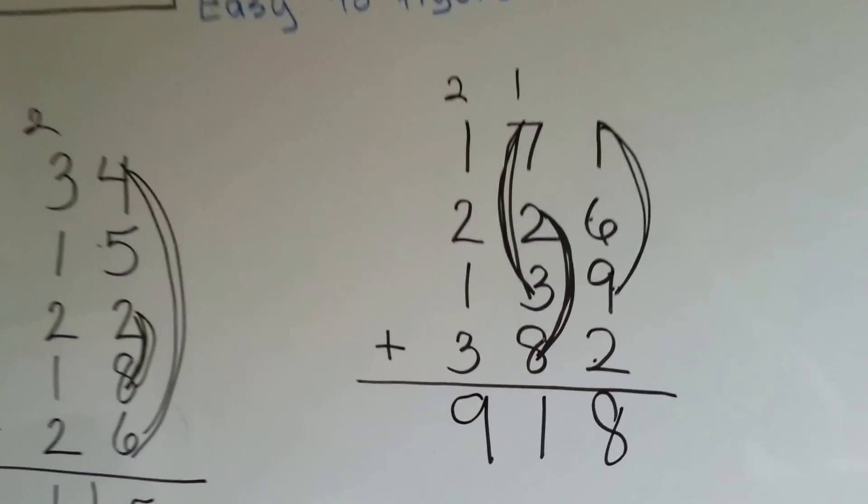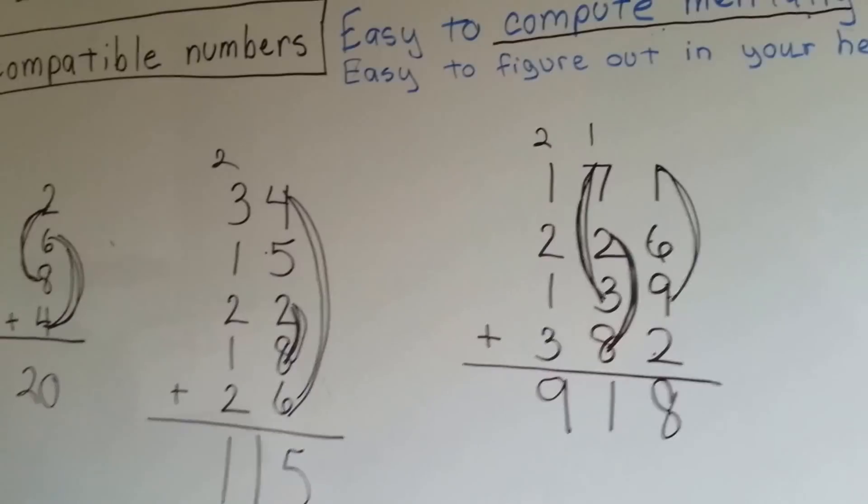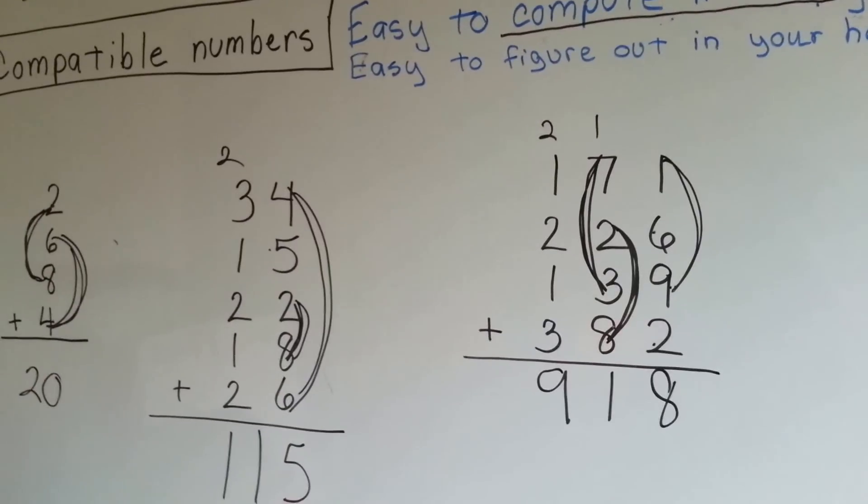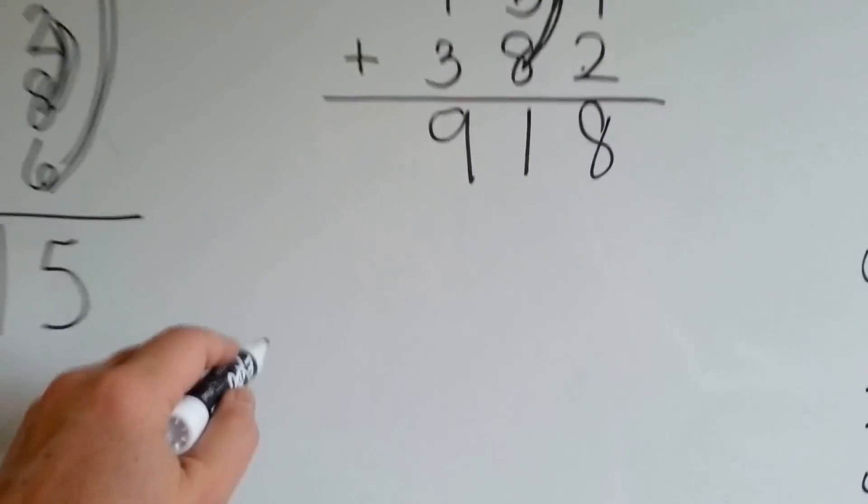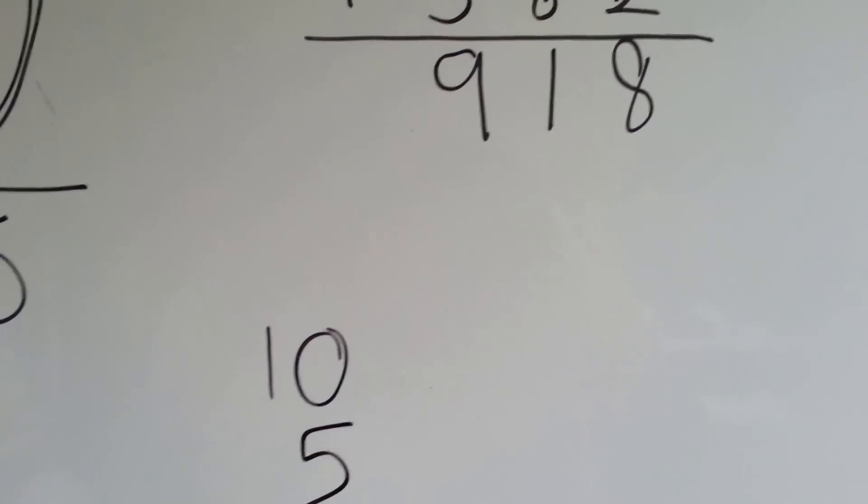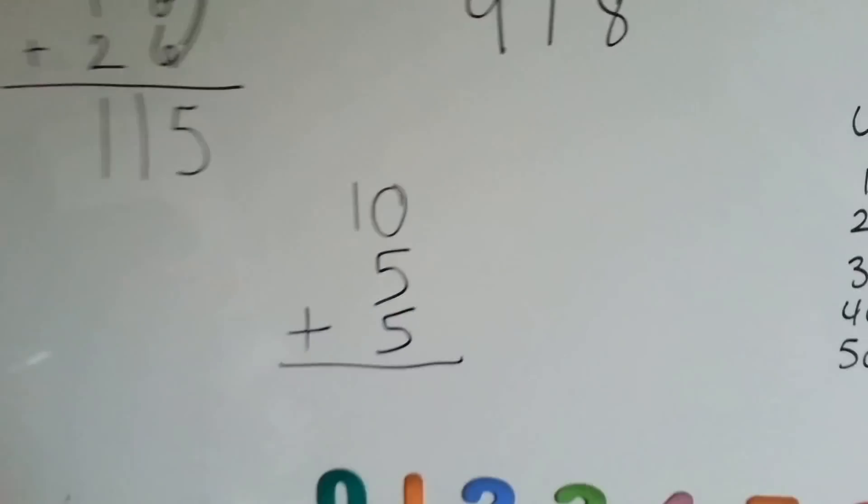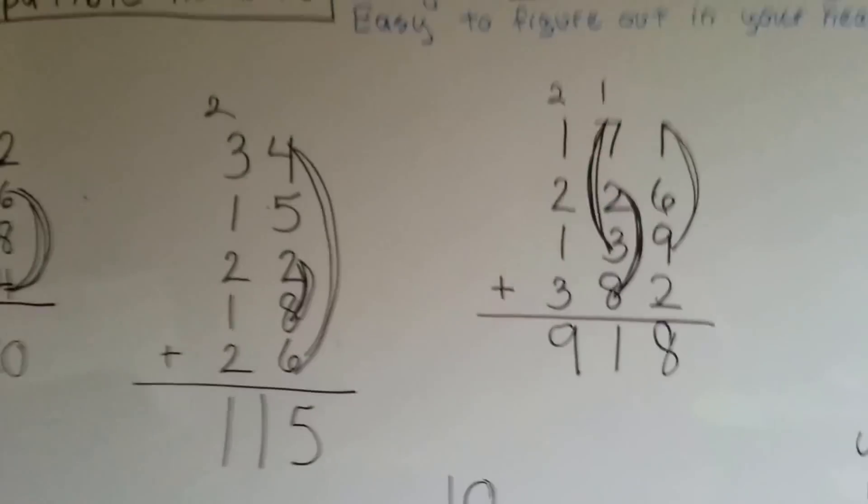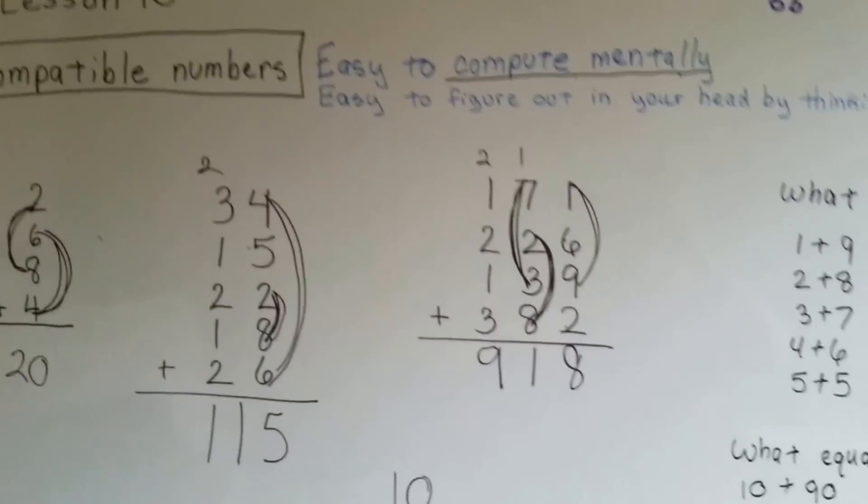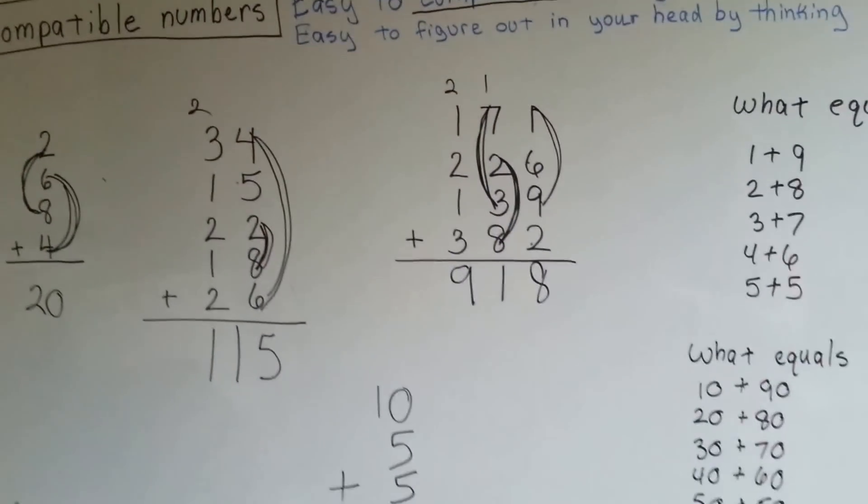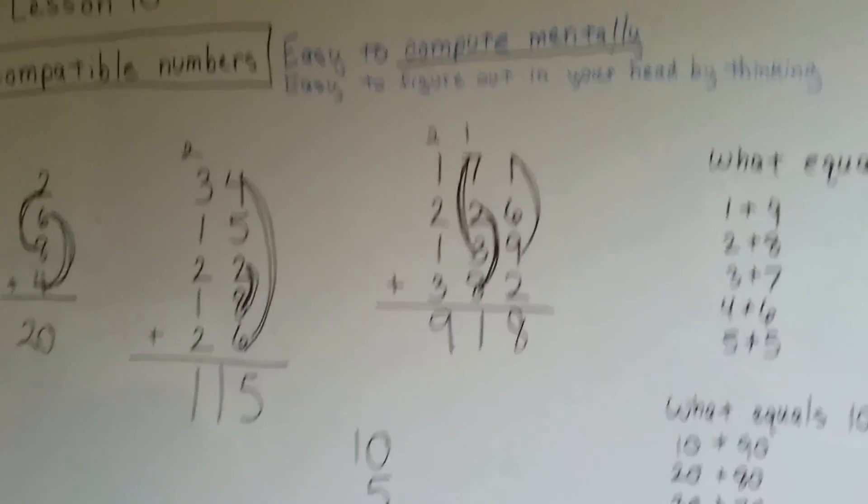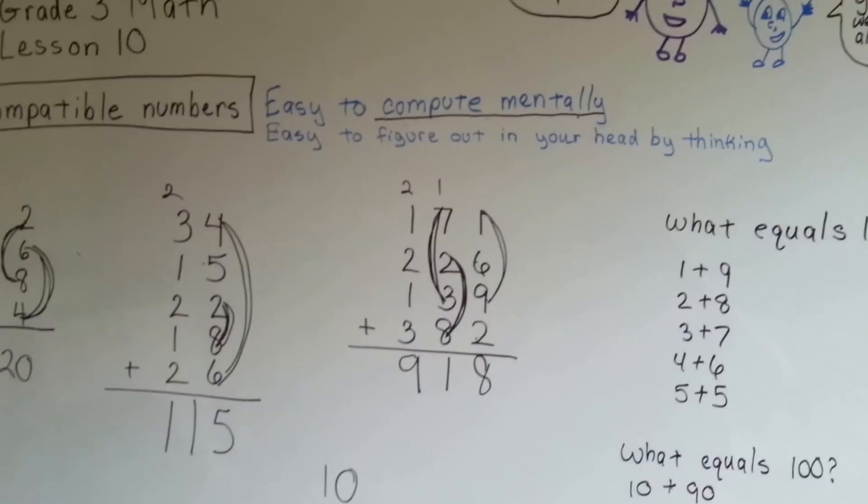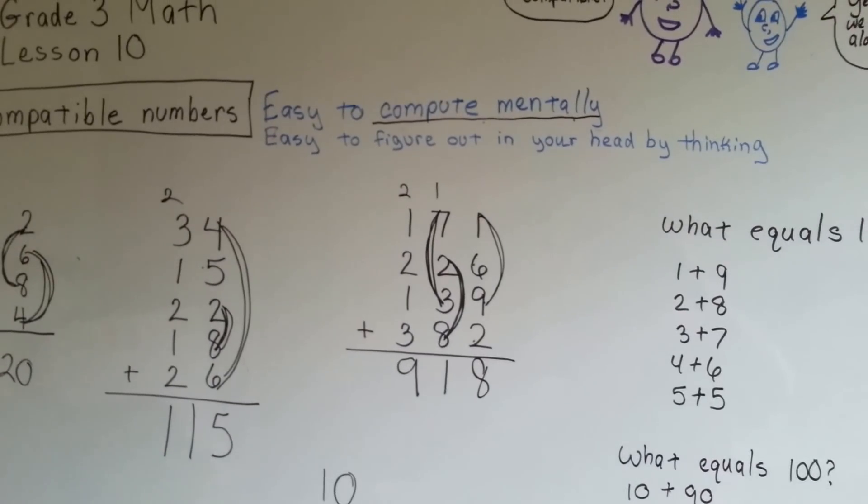Try doing some compatible numbers in your head. How about 10, plus 5, plus 5. Could you do that in your head? 10, plus 5, plus 5. Try doing some in your head, and imagining them, and see how good you are. 5 and 5 is 10, so that would be 20. No fingers. Just doing it in our head. That's a compatible number. See you next video. Thank you.